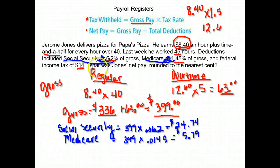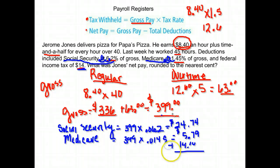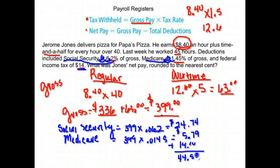The only other deduction is income tax, and it tells us the amount is $14 — no calculating needed there. Now let's find our total deductions, because to get net pay we take gross pay minus total deductions. We add $24.74 plus $5.79 plus $14, and we get $44.53 in total deductions.